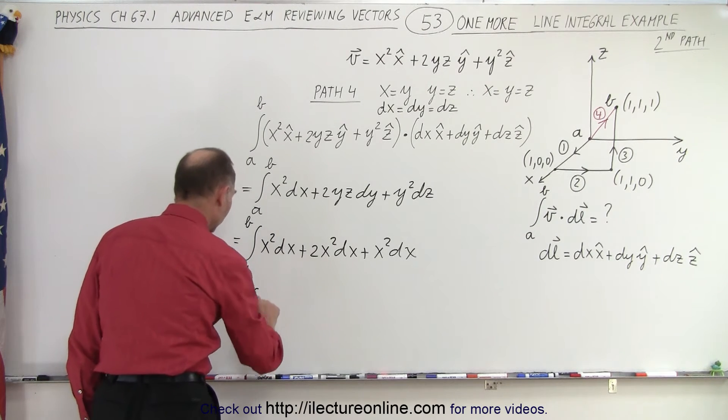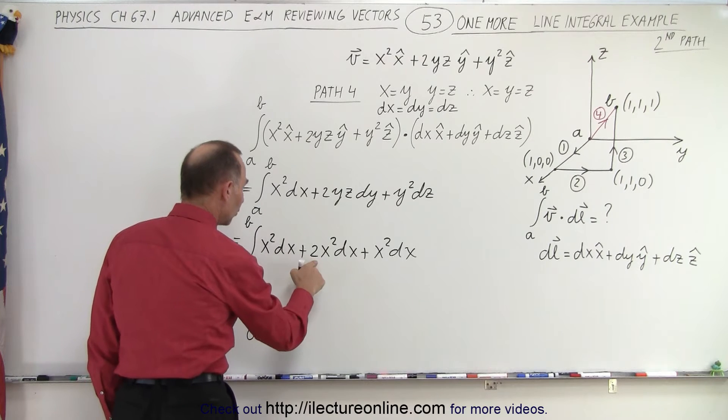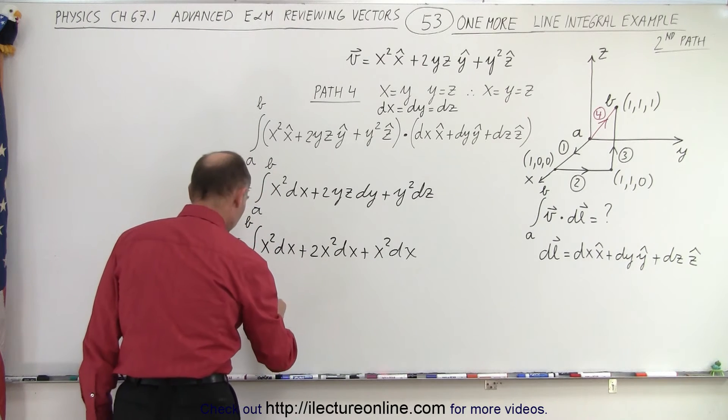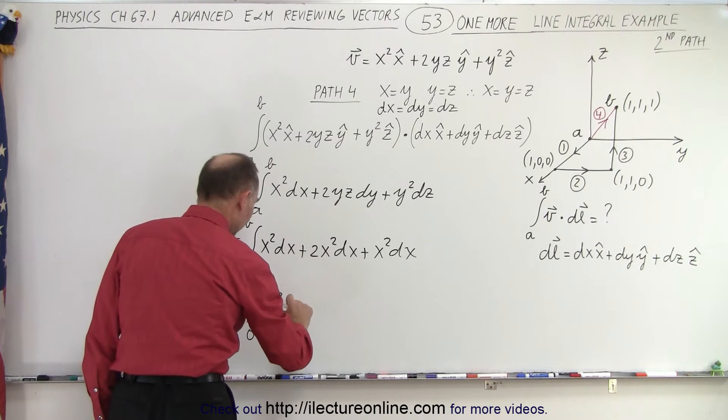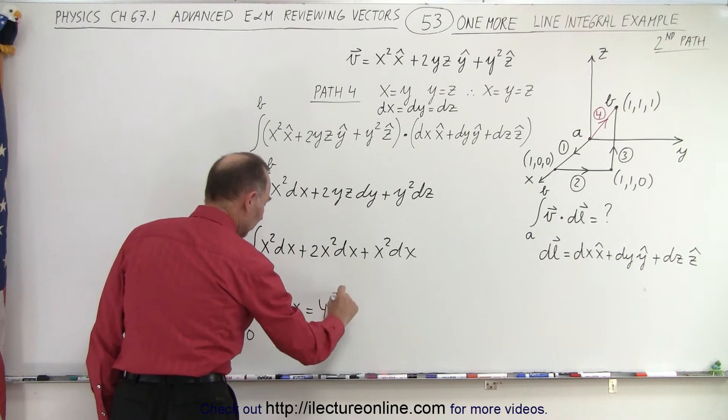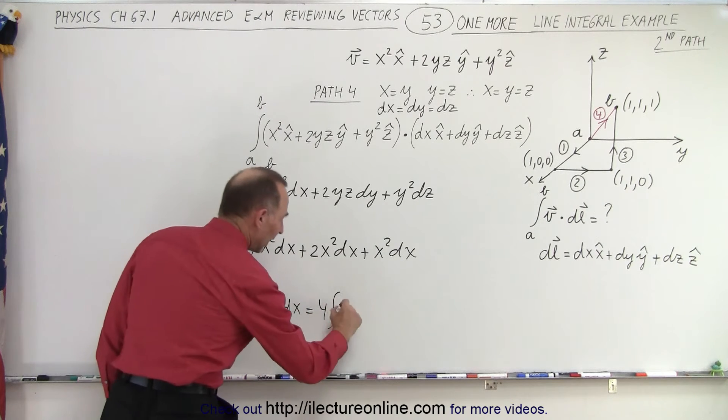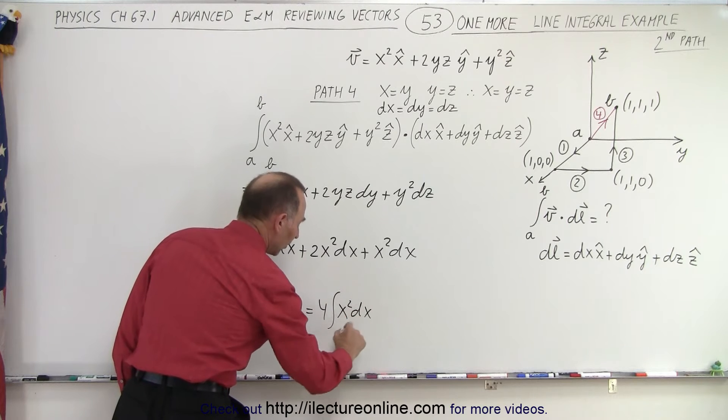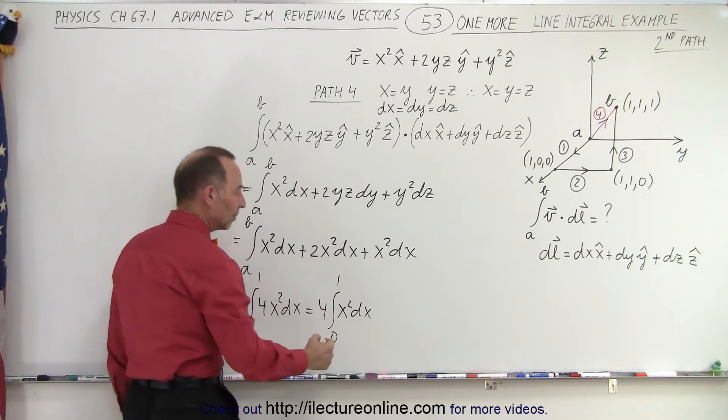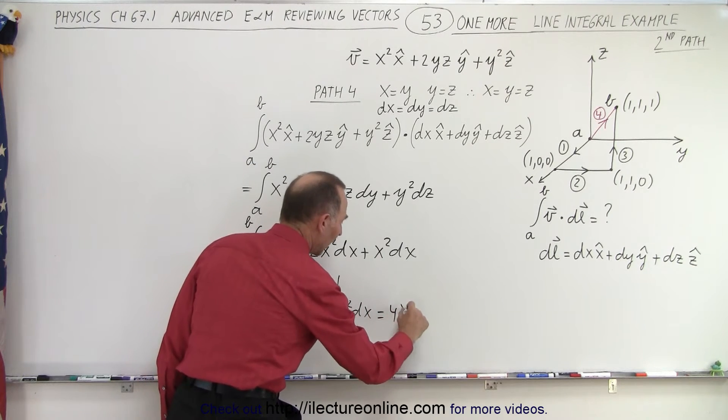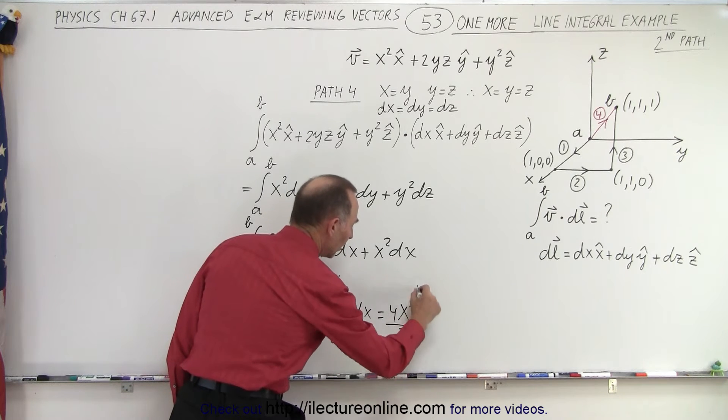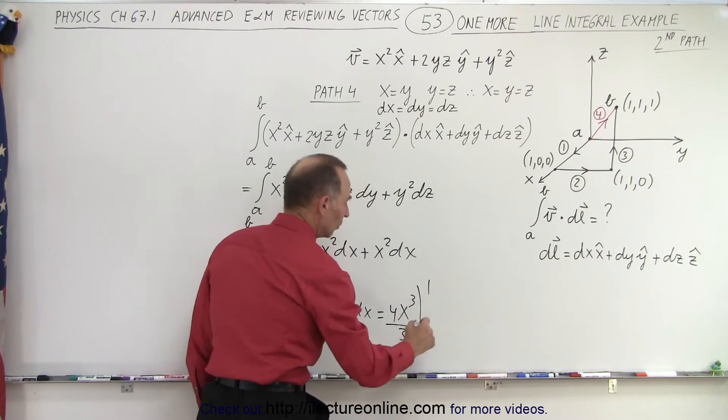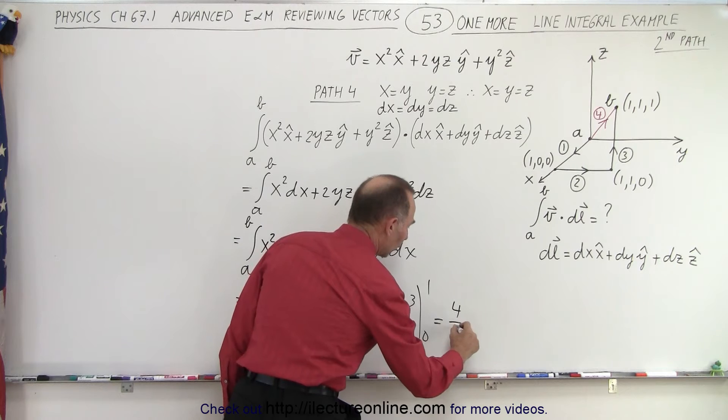So this is equal to the integral from 0 to 1 of x squared plus 2x squared plus one other x squared, that is 4x squared dx, which is 4 times the integral of x squared dx from 0 to 1. Of course, that can be easily integrated to be 4x cubed over 3 from 0 to 1. And so this becomes equal to 4 over 3.